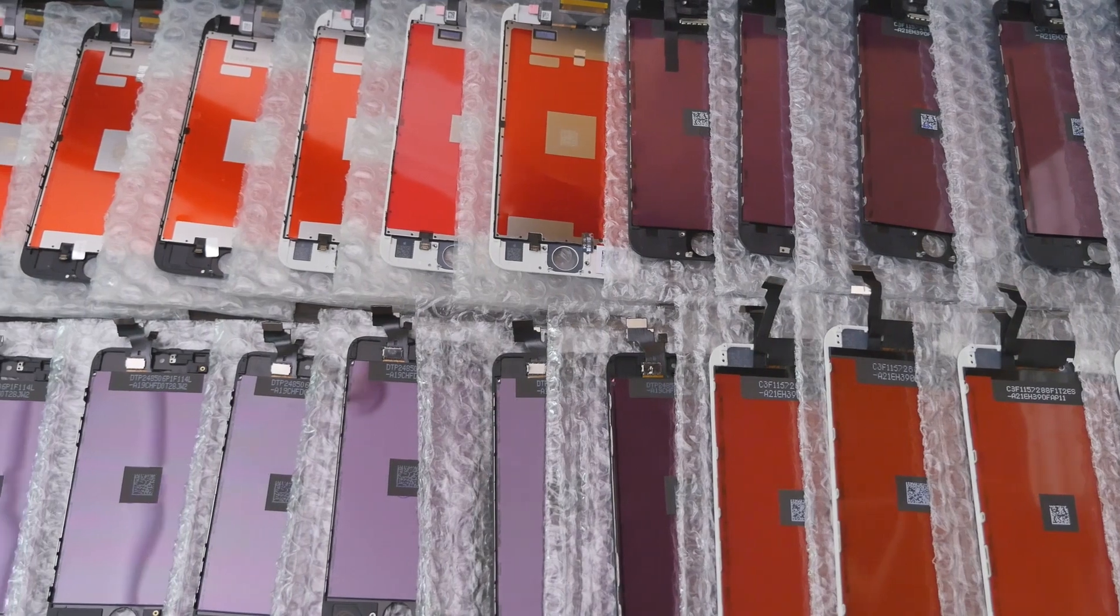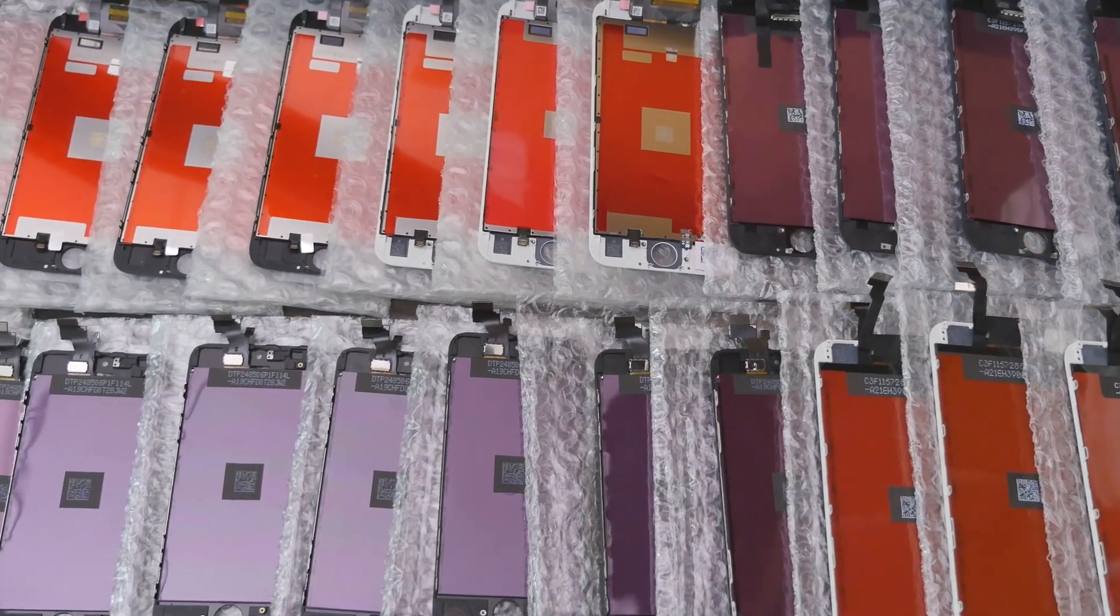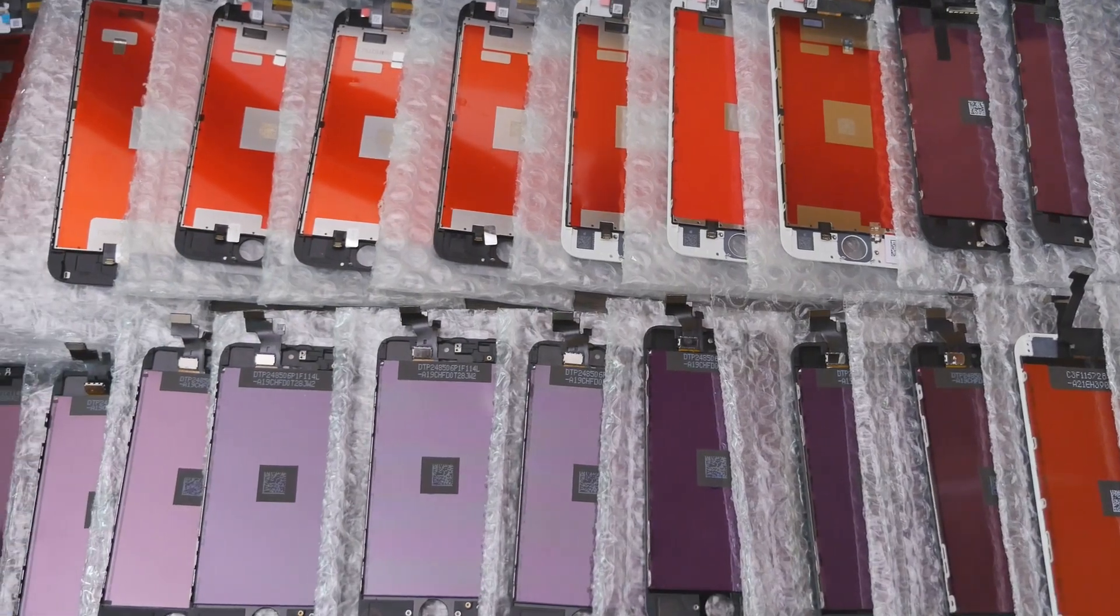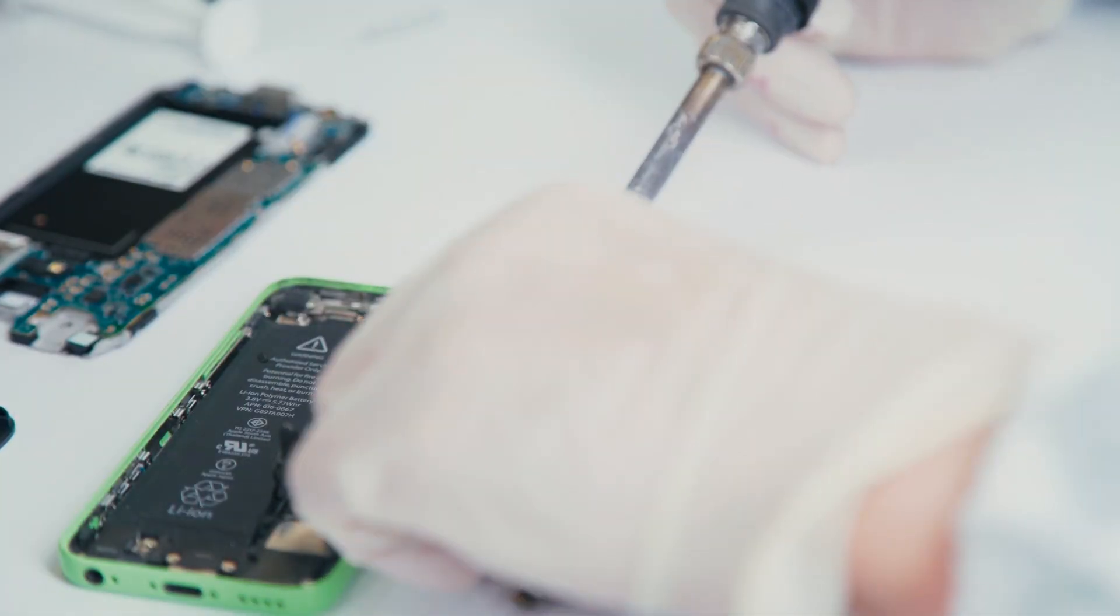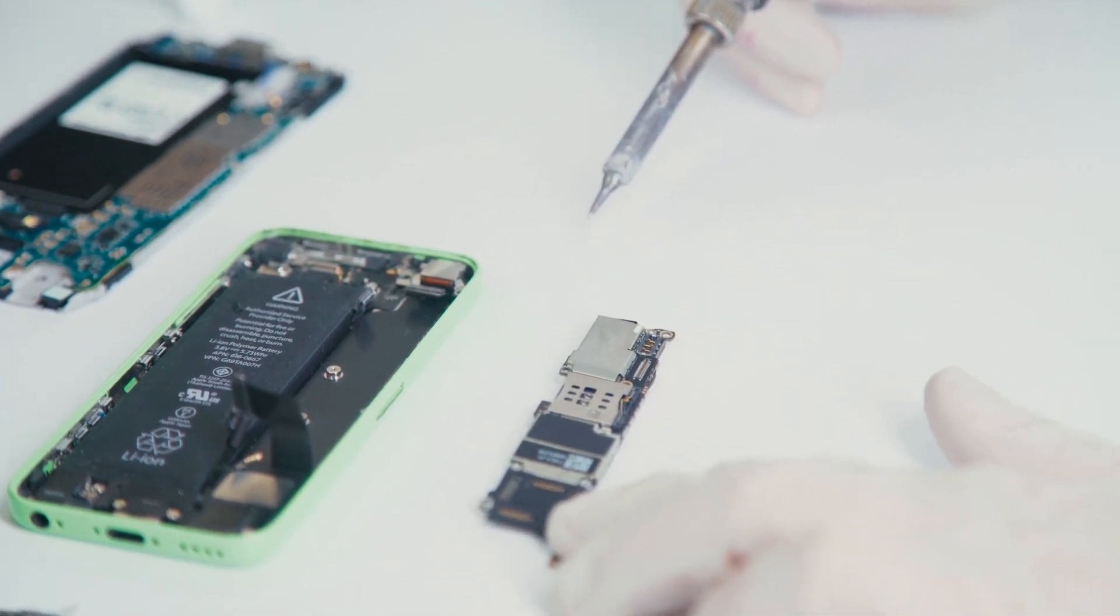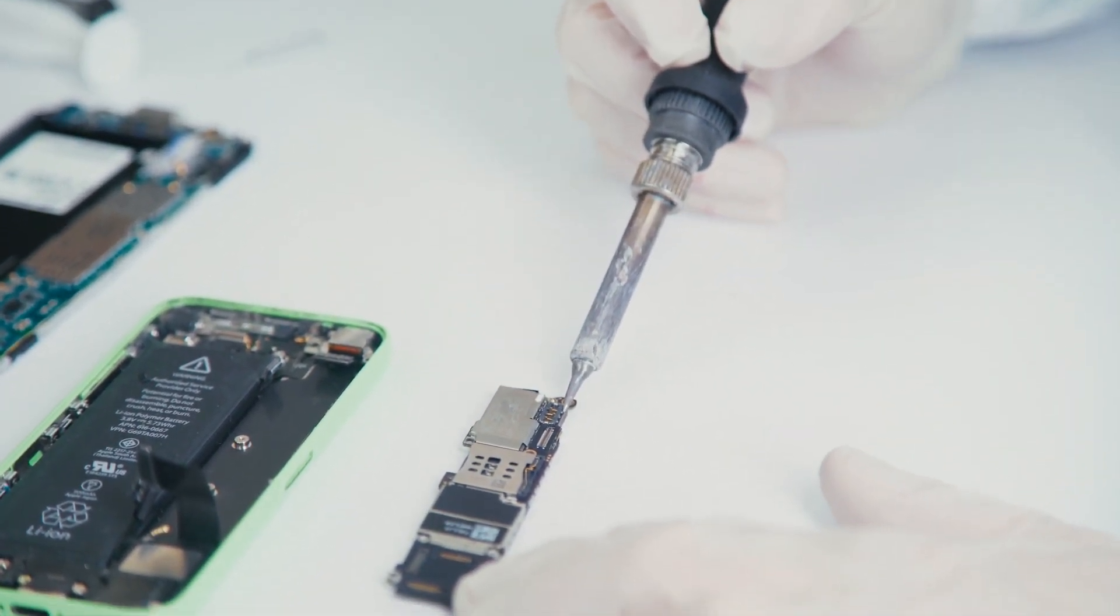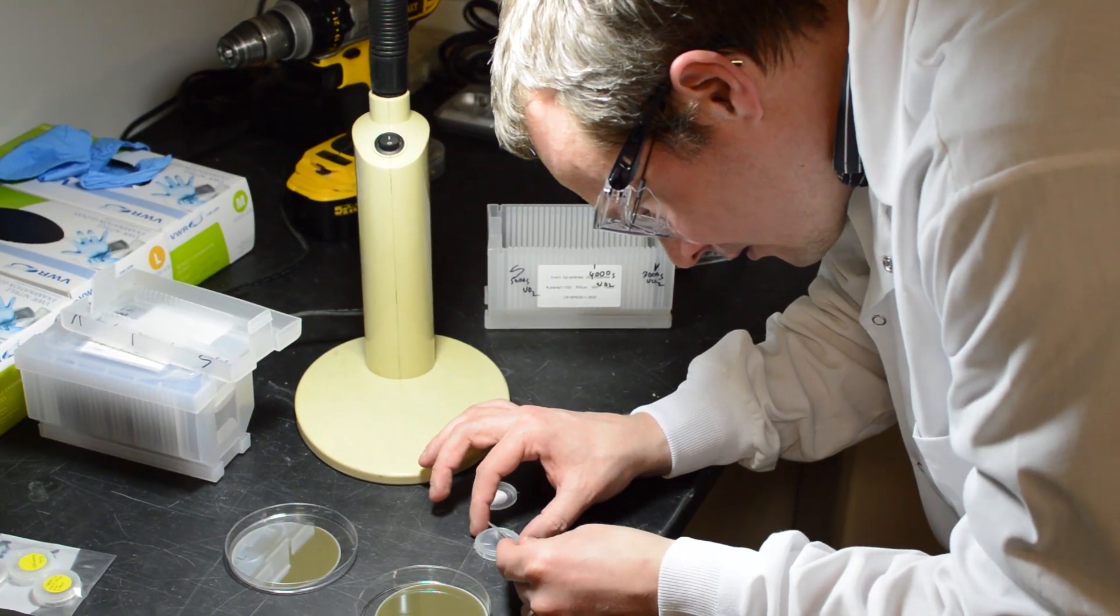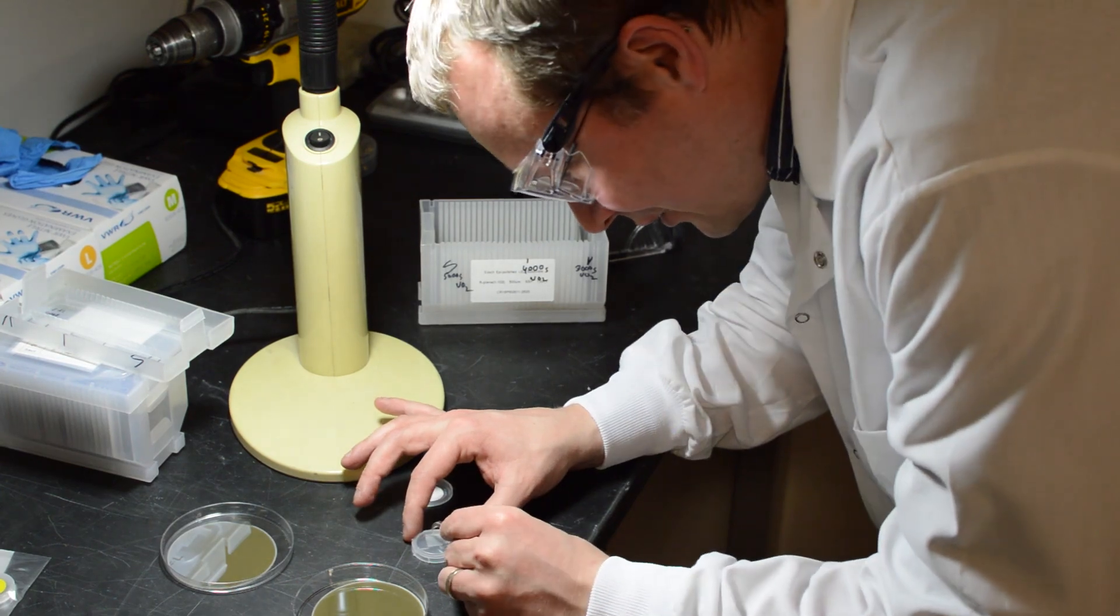For decades, indium tin oxide has been the most commonly used transparent conductor. It's used in more than 90% of all display and touch screen devices. However, the manufacturing of indium tin oxide film faces substantial hurdles, including decreasing availability and rising costs. Despite many years of research, there has been no clear replacement.